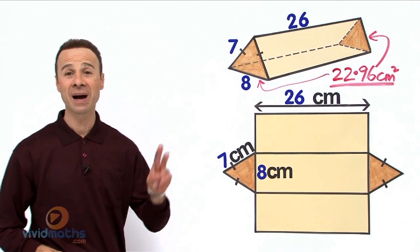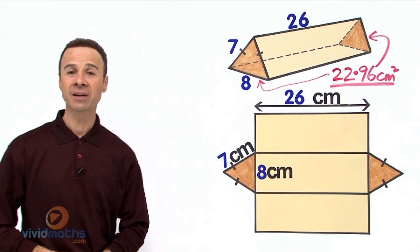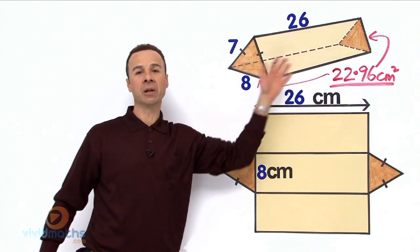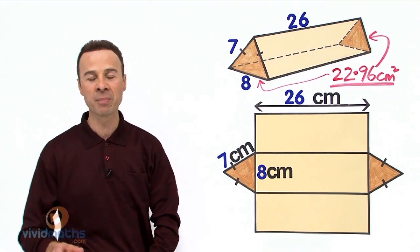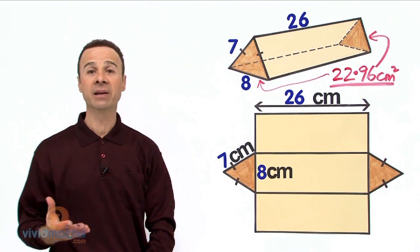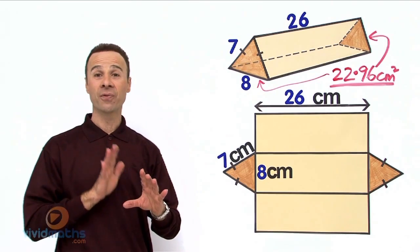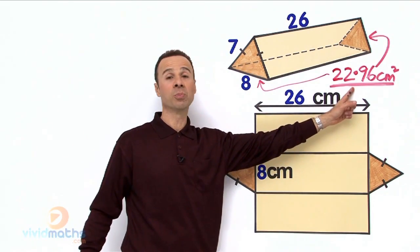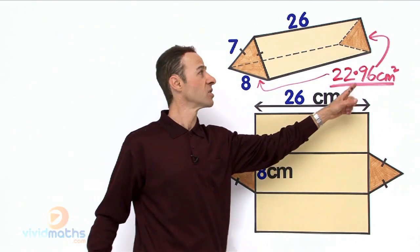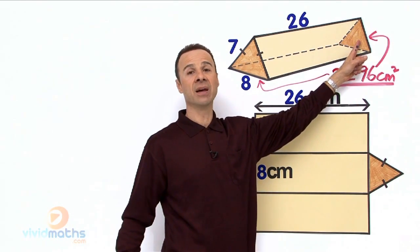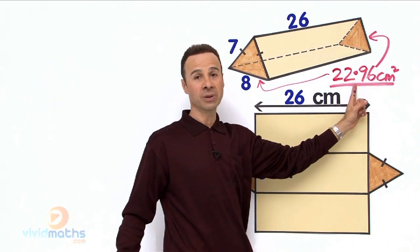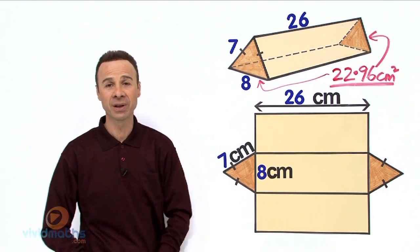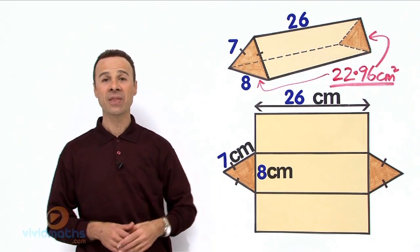Welcome to part 2 in our journey of calculating the total complete entire surface area of this triangular prism. From part 1 we calculated the front triangular face area as 22.96, and the back face right over there in brown is also 22.96. So we have 2 faces out of a complete total of 5 faces.